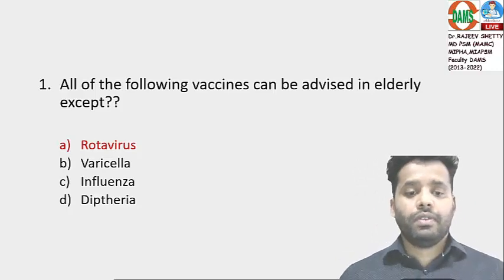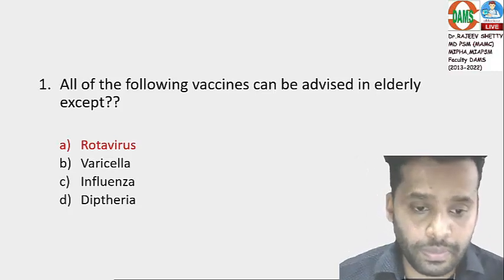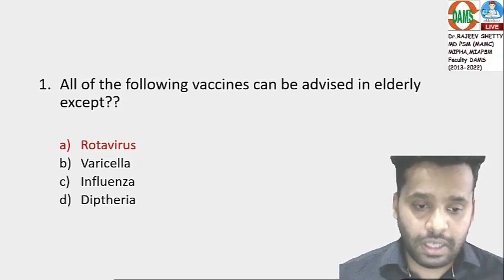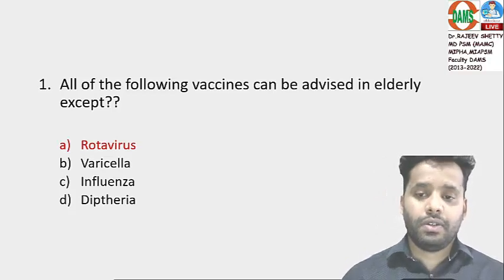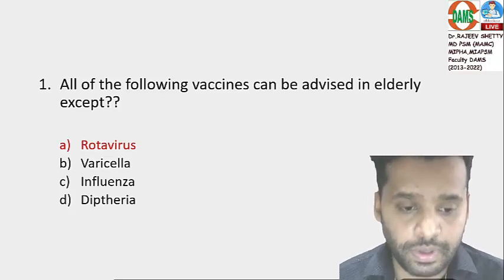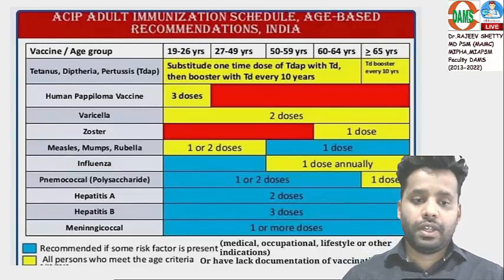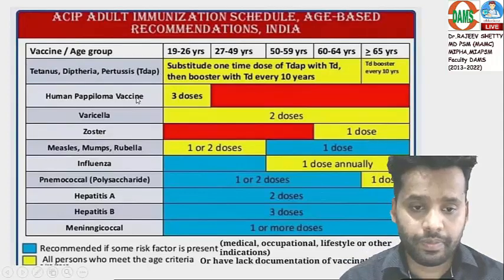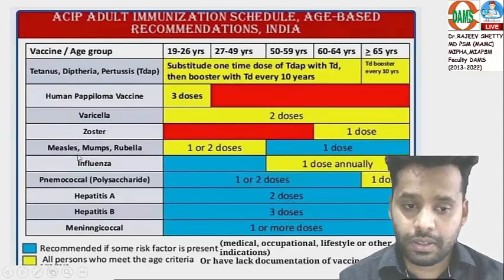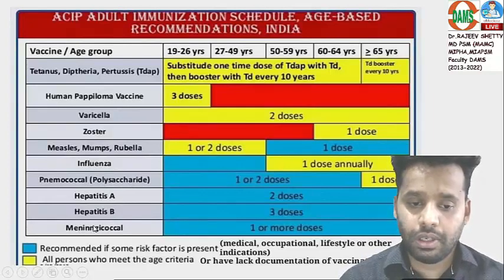Question number one: all of the following vaccines can be advised in adults except. This is regarding adult immunization. Rotavirus has no role in adults. Varicella can be advised; influenza vaccine is important. Diphtheria — depending on the age — can be given in adults nowadays. The adult vaccination schedule includes diphtheria, tetanus, HPV, varicella, zoster, MMR, influenza, pneumococcal polysaccharide, hepatitis A, hepatitis B, and meningococcal vaccine.